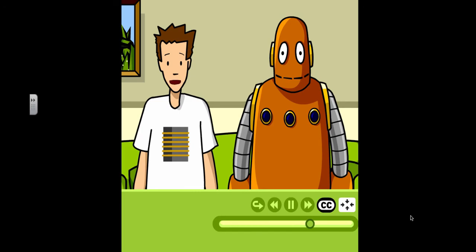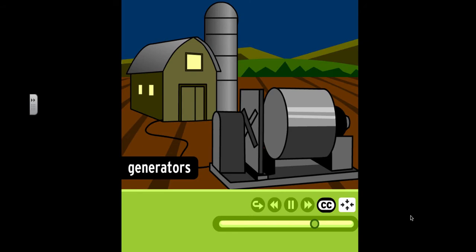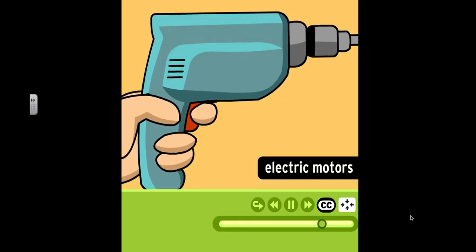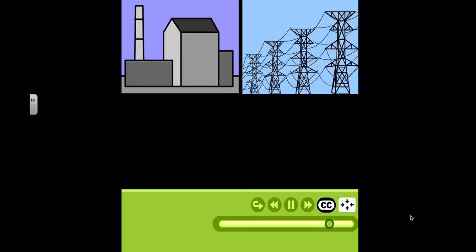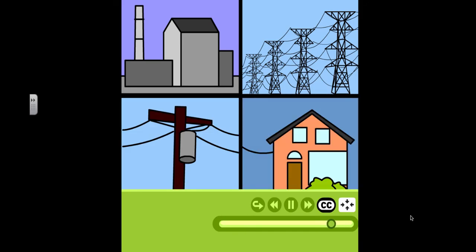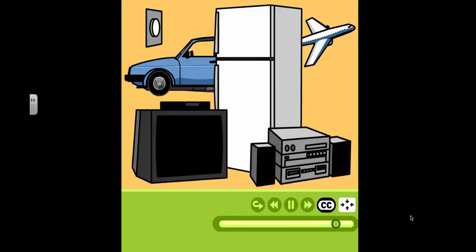Electromagnetic induction is responsible for the widespread use of electricity in our world today. Generators, machines that convert movement into electricity, use moving magnets to create a current. Electric motors do the opposite, converting electricity into mechanical motion. And transformers use induction to convert the strength of an electric current. That's how the high voltage current from the power station is converted into the lower voltage current that your house uses. Last but not least, just about every electronic technology from doorbells to airplanes uses electromagnets, magnets created by electricity. It'd be pretty hard to imagine a world where we didn't use electromagnetic induction.